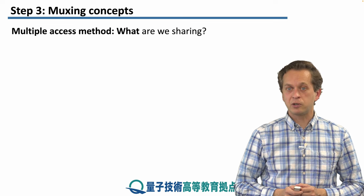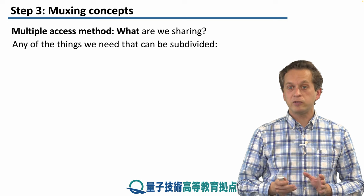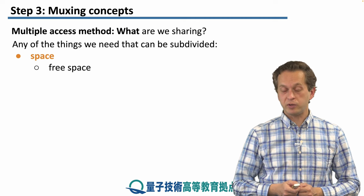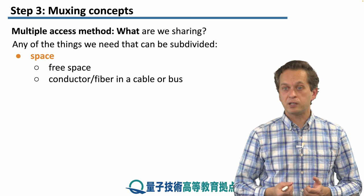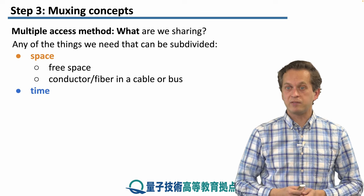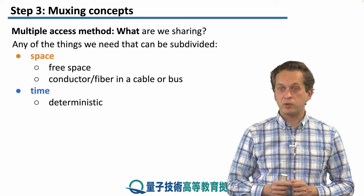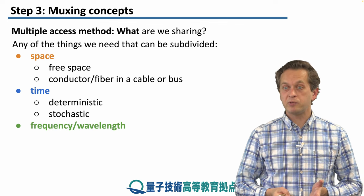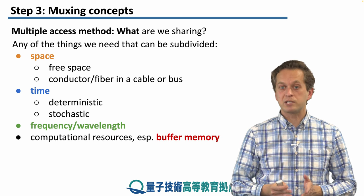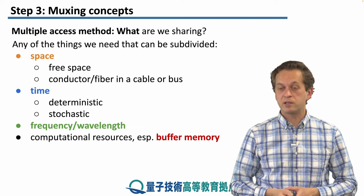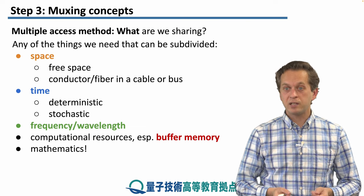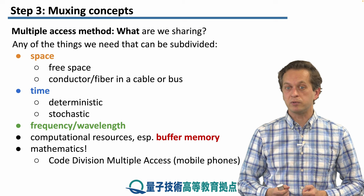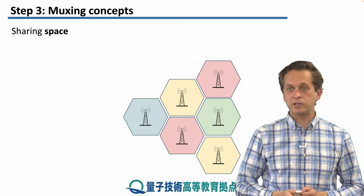Now let's turn to the question of what we are trying to share. Any of the following things can be subdivided: we can subdivide space, time — either deterministically or stochastically — frequency or wavelength, and computational resources such as buffer memories inside our quantum nodes. We can even subdivide mathematics, which is done in CDMA for mobile phones, or code division multiple access. Let's look at all of these categories one by one.